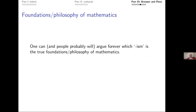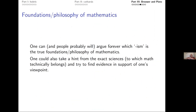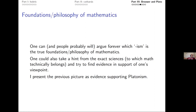People will argue forever about which ism is the true foundation of math. But let's take a hint from the exact sciences and look for evidence. The previous picture — higher-order equivalences mapping via ECF to the Big Five — is evidence supporting Platonism and Plato's cave: the idea that we only know shadows or reflections of ideal objects. This exists concretely in the foundations of math. I've just pieced it together. Come back when you have better evidence for your rival theory.